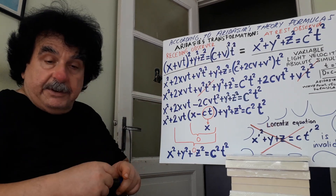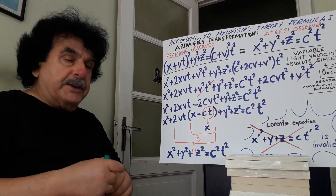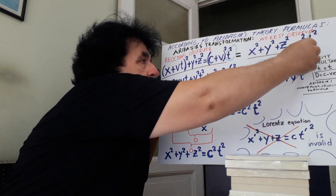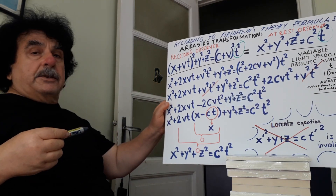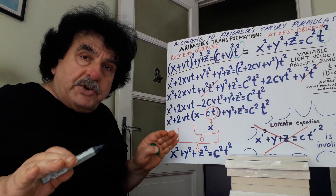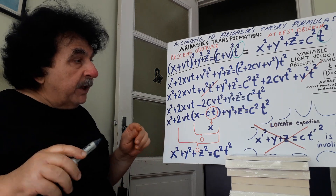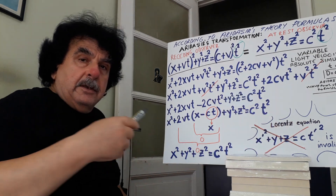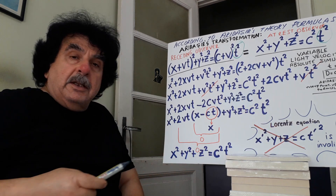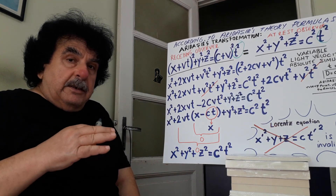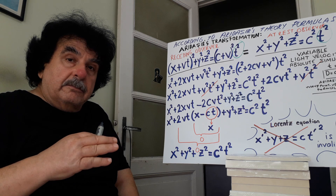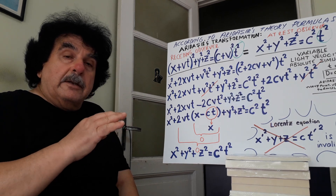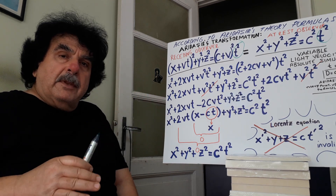And here: absolute simultaneity. Time in these two sides does not change according to my theory. But in the Lorentz equation, time changed — there is no simultaneity, only relative simultaneity. According to Einstein, relative simultaneity; according to me, absolute simultaneity.